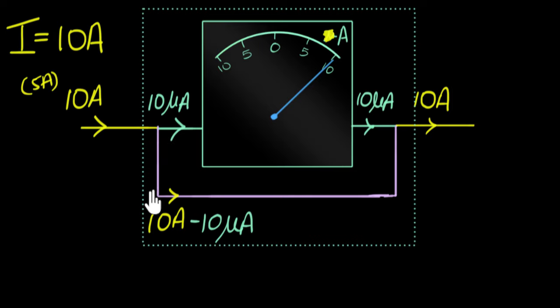And what I mean is, how do we ensure that exactly 10 minus 10 microamperes flows over here? This is no longer a galvanometer question. This is a question about basic electricity. How do I ensure that only 10 microamperes flows here and the rest of the current flows over here? Can you think a little bit about how would you approach this problem?